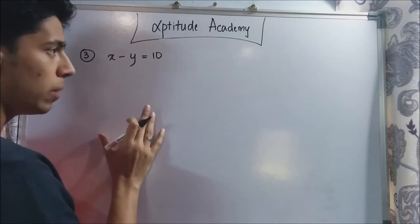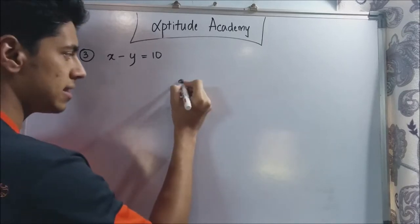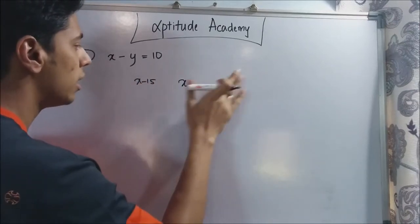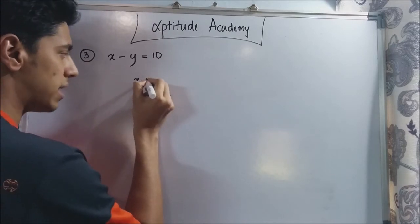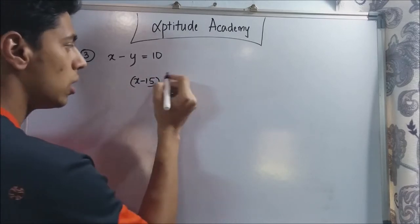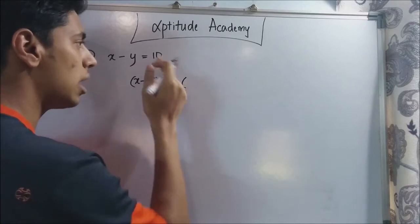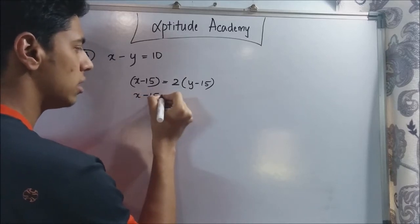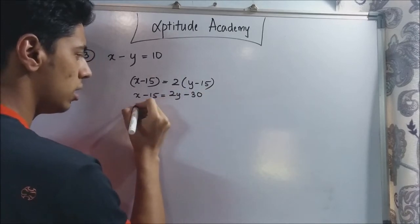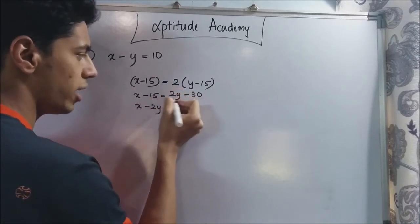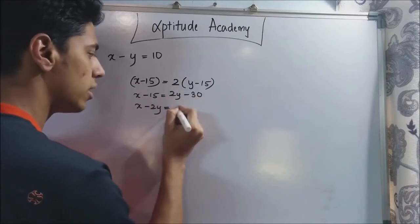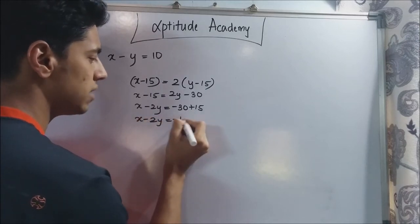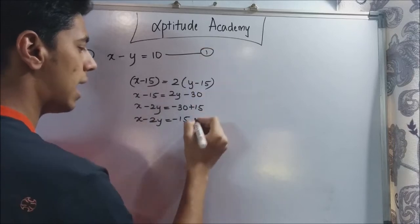Fifteen years ago, the elder one was twice the age of the younger one. If the present age of the elder is x, fifteen years ago it was x minus 15. Similarly, the younger one fifteen years ago was y minus 15. So the equation is: x minus 15 equals 2 times (y minus 15), which gives x minus 15 equals 2y minus 30, or x minus 2y equals minus 15. This is the second equation.